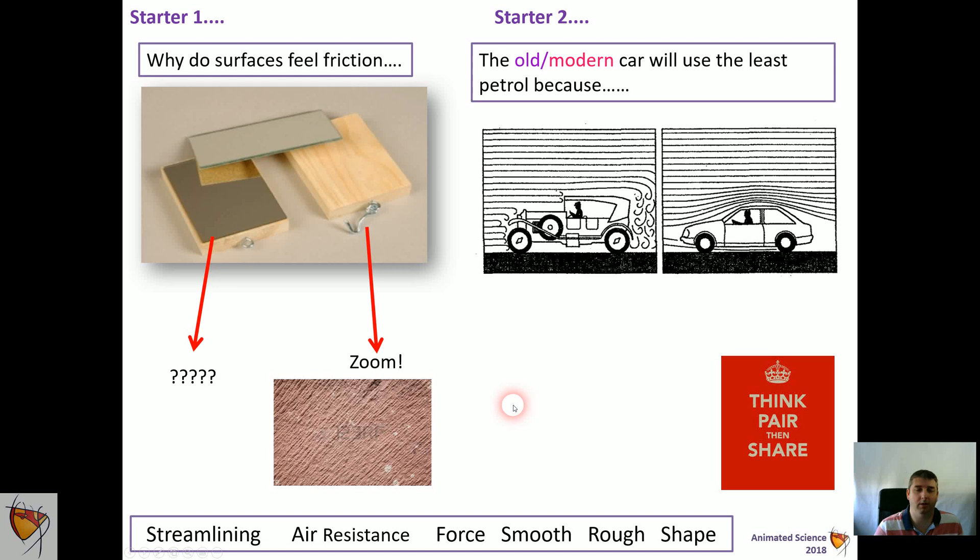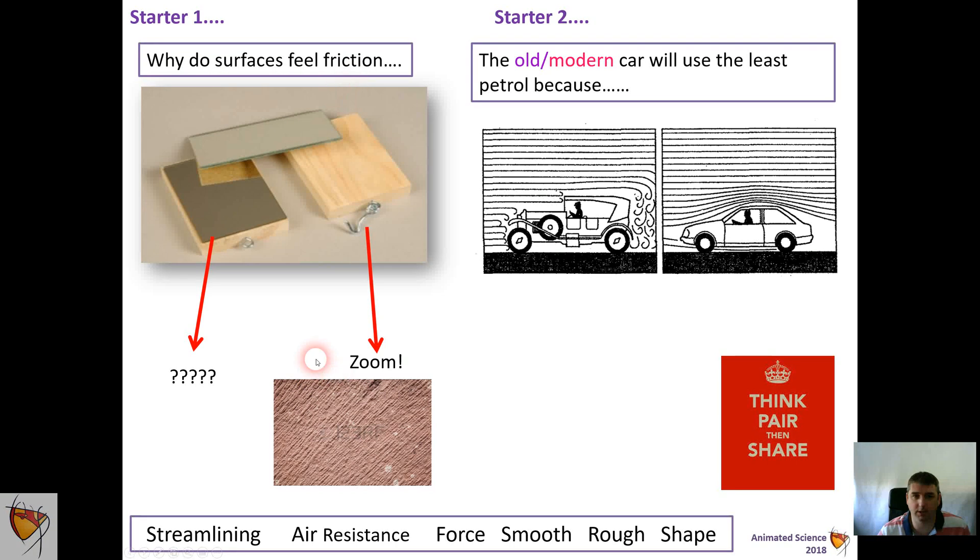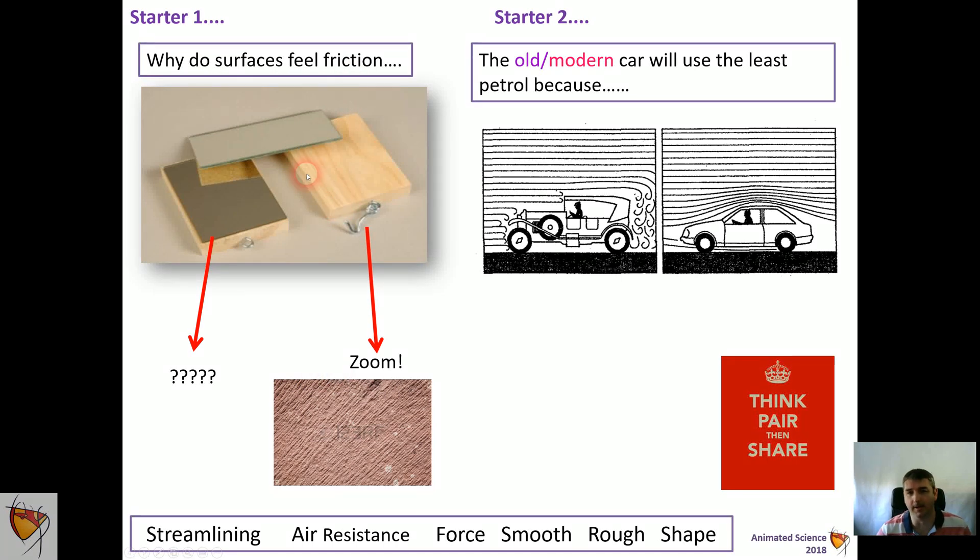Okay, so we're moving on to think about lesson three, which is friction, and you can start by having to think about why surfaces feel friction. So if you even think about a very simple smooth surface like glass, there it looks very smooth, but once you actually zoom in, actually it's not quite as smooth as it looks.